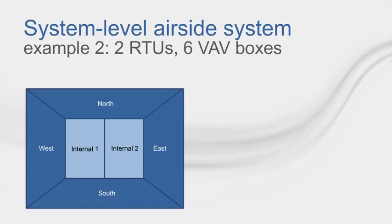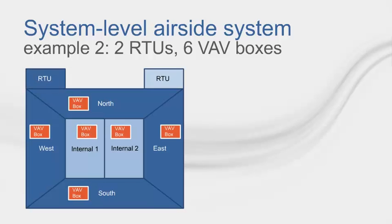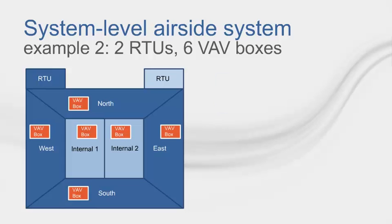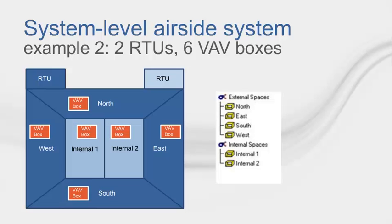In this next example, we have two systems — still six rooms, but now two separate plenum spaces. All the rooms still get their own VAV boxes, but the internal spaces share their own plenum, and the external spaces share their own plenum. In TRACE, this looks like this. Remember, the number of systems you have dictates the number of plenum spaces you have in your building.